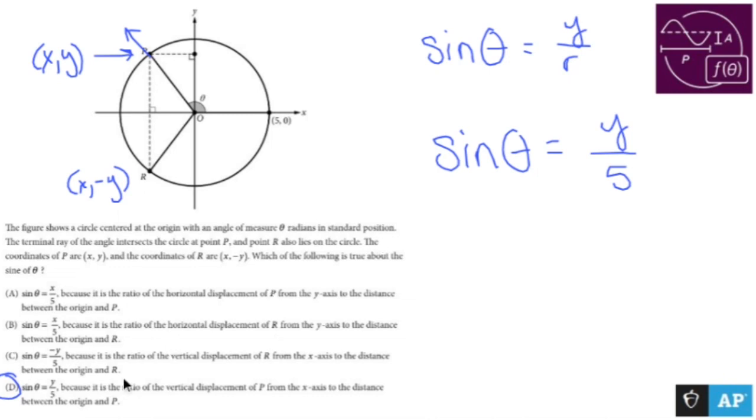But sine theta is y over 5 due to the fact that we have this basic trig concept. Sine theta equals y over r. So yeah, I probably overcomplicated it. And maybe this problem overcomplicated it, but don't overcomplicate it. It's not that bad.